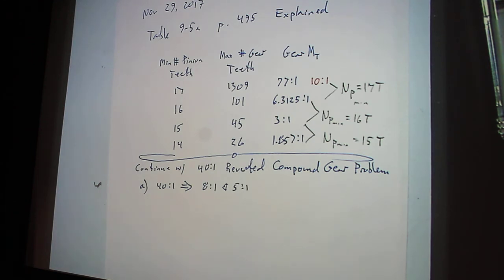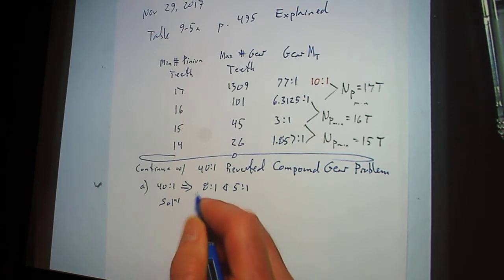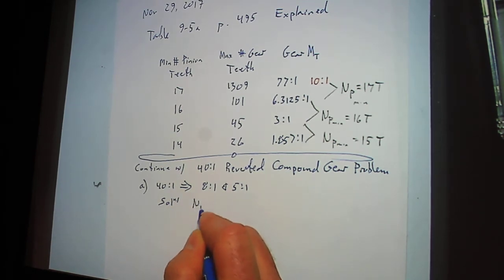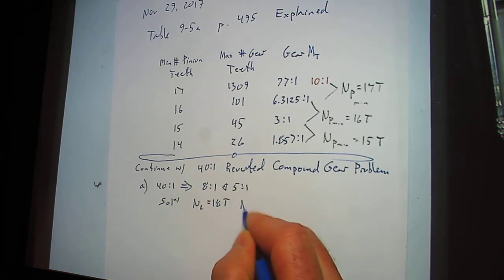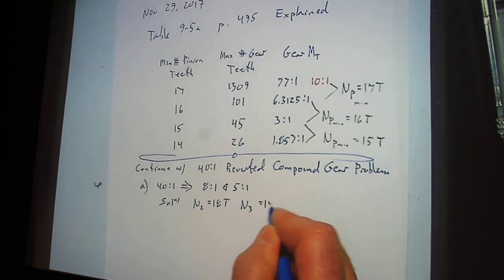And we eventually ended up having N2, the solution to this was N2 equal 18T. And N3 equals 144T.